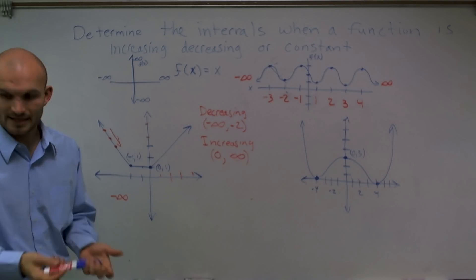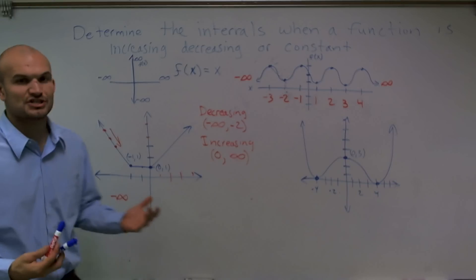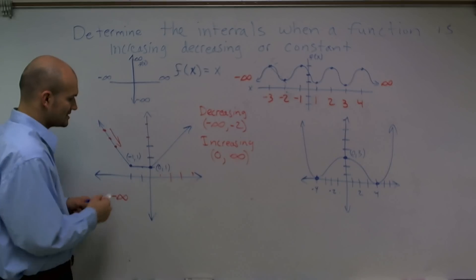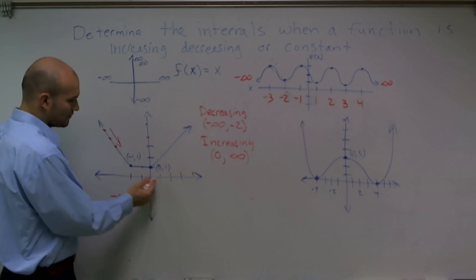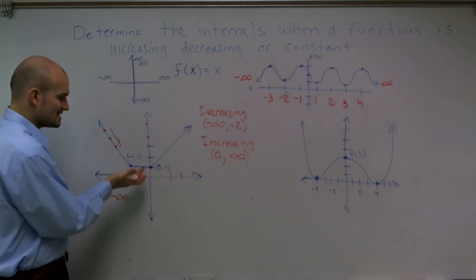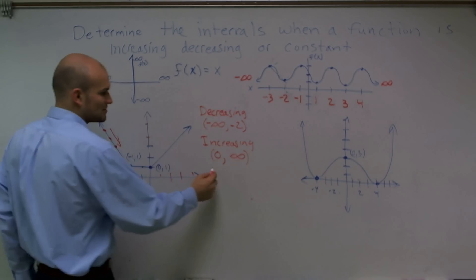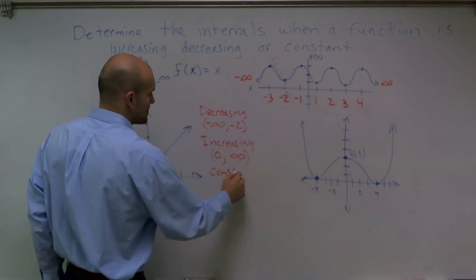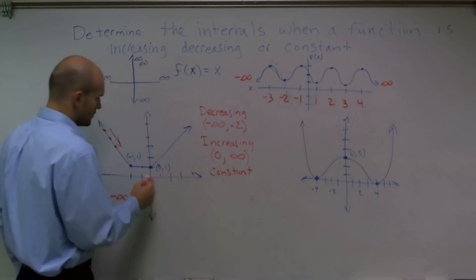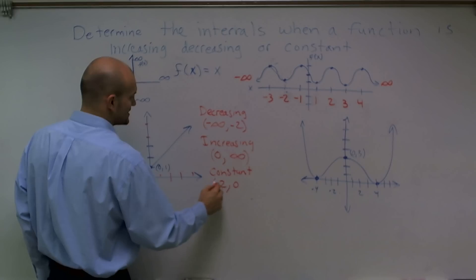Now let's see when the graph would not change — when is it going to be constant? You can see that from the interval of negative 2 to 0, the graph has not changed. It's not gone up, nor has it gone down. So we can say the graph is constant from negative 2 to 0.